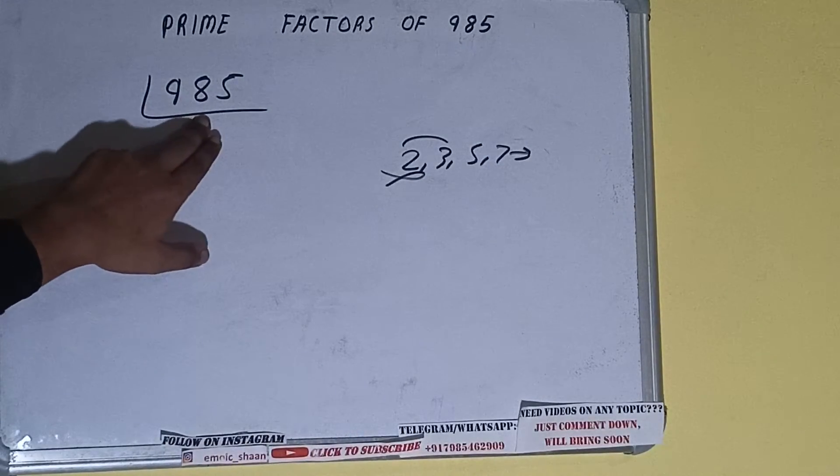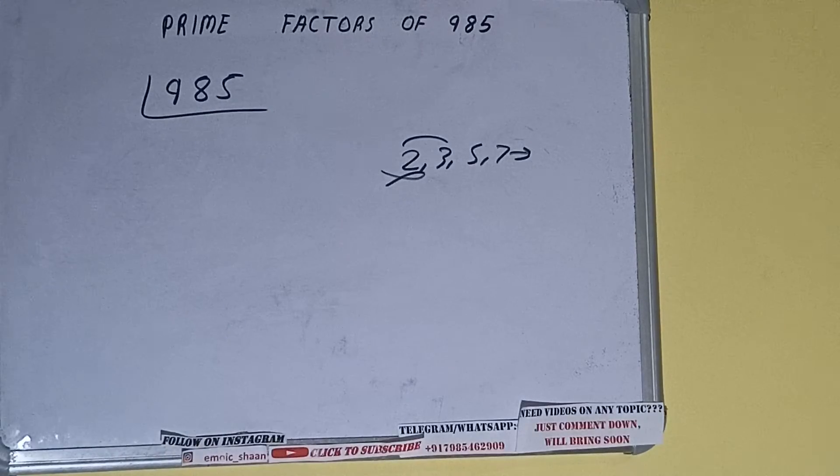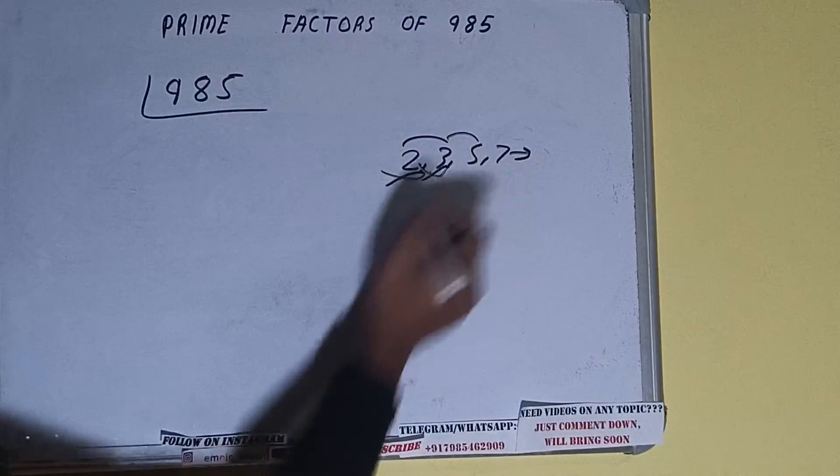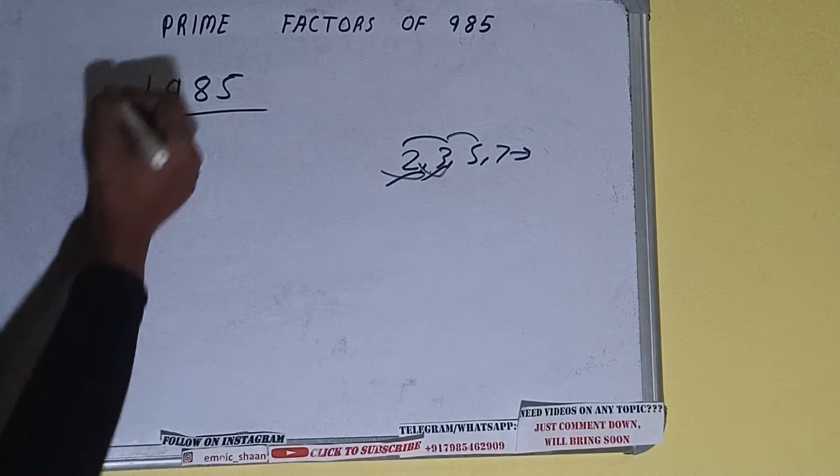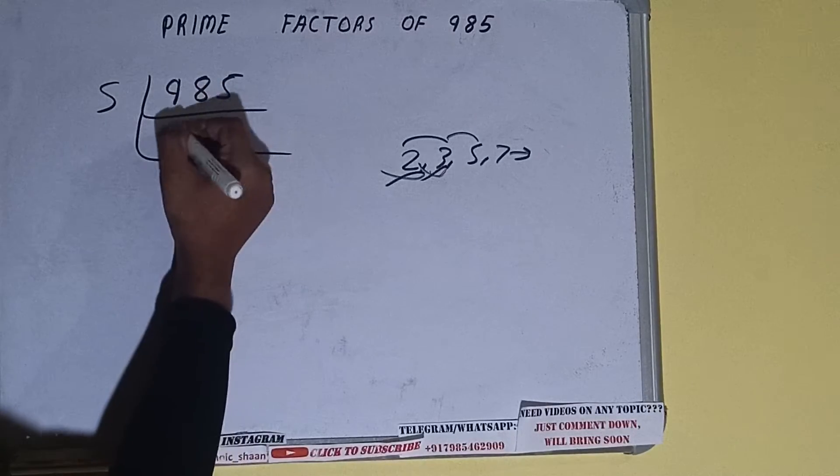It is not divisible by three also. Let's check with five. The last digit is five, so it is divisible by five. So divide it and we'll be having 197.